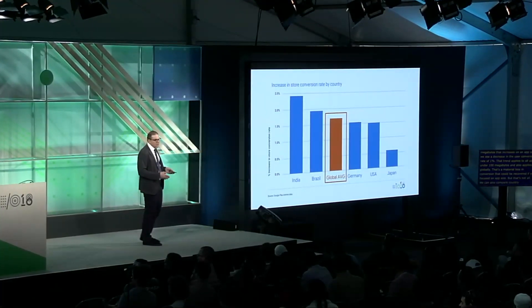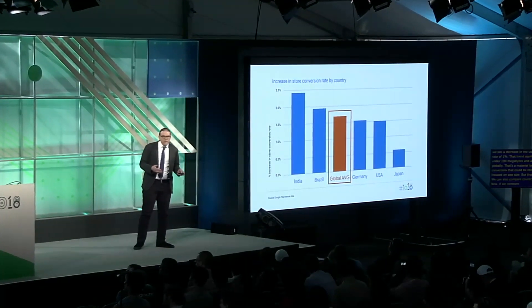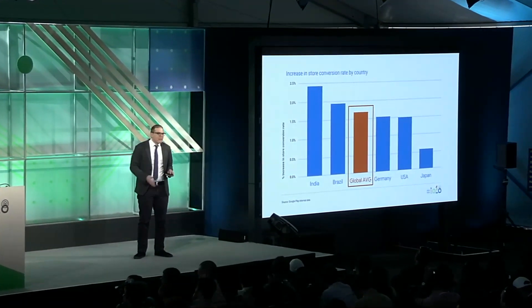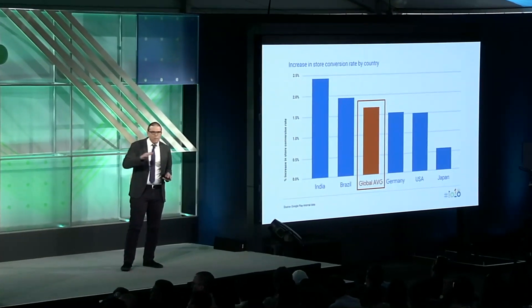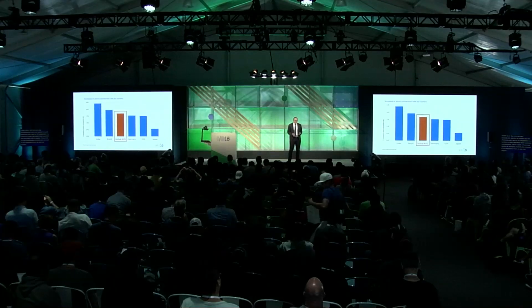We can also compare country by country. If we compare the percentage increase in conversions by reducing app size by 10 megabytes, we see by the global average that worldwide users see more benefit and tend to install more. But this can vary dramatically country by country. Shrinking your app by 10 megabytes in a country like India or Brazil has a larger impact on store conversion rates than countries like Germany, the USA, or Japan. Across all emerging markets, the removal of 10 megabytes roughly correlates with an increase in conversion rate by about 2.5%.